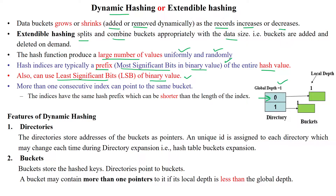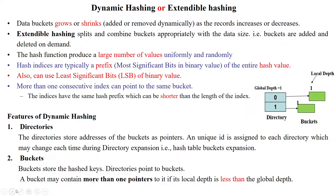Here the hash table is having a binary value as its indices. This is called a directory, and the directory is having a global depth of one — that's why we are having only single digits of the LSB or MSB. These two boxes are representing the memory buckets. The memory buckets are pointed out by the directories. The consecutive indices can point to the same bucket, and the same index can point to a number of buckets.